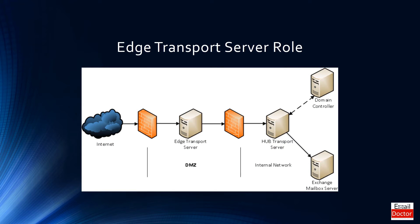The edge transport server role is to protect your Exchange Server environment from spammers, viruses, and any other threats. As you can see, it sits between two firewalls — one internal and another external firewall.